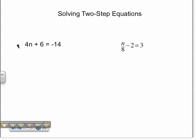In our first problem, we see that there's multiplication and addition. We're going to start off by subtracting 6 on both sides of our equal sign. Remember to keep our equation balanced. What we do to one side, we must do to the other.